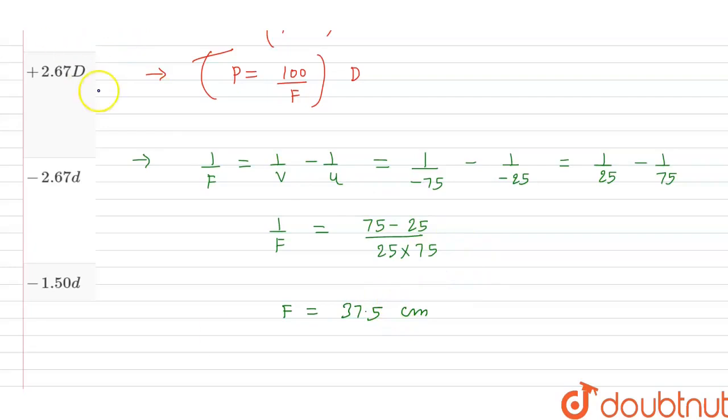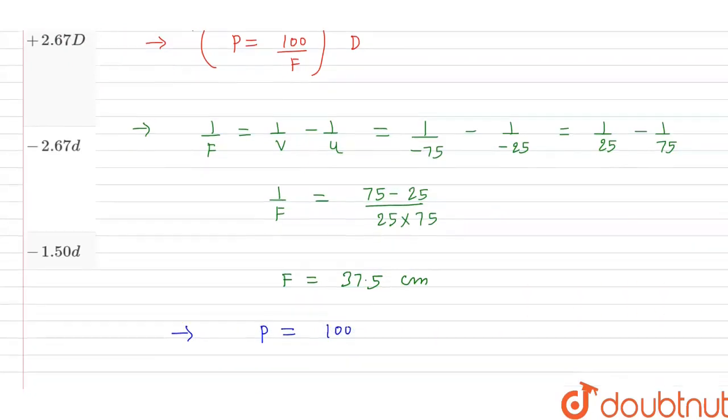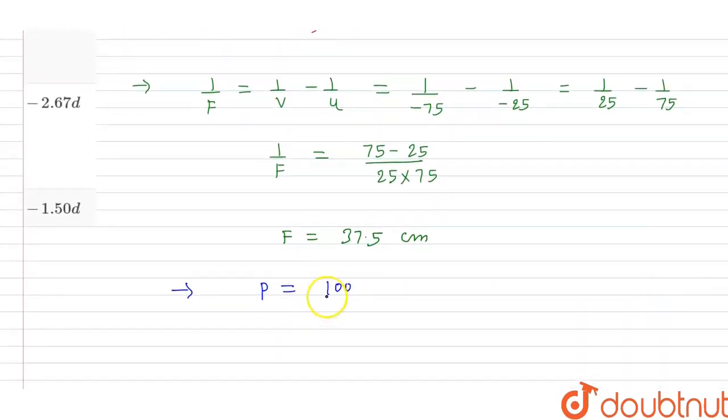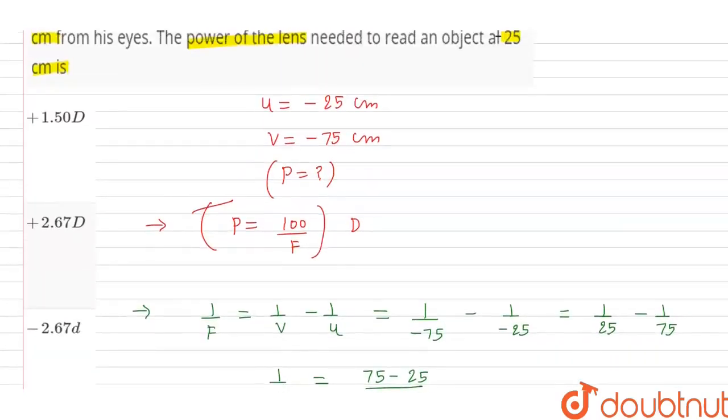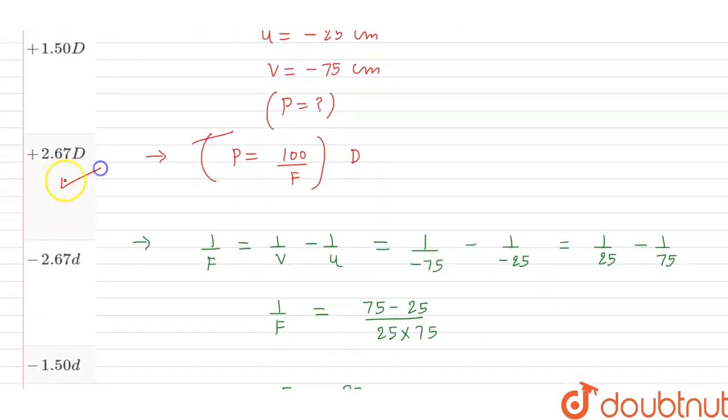Now we can calculate power of the lens. Power equals 100 divided by f equals 100 divided by 37.5. So after solving this we get power which is equal to 2.67 diopter. Now let's see which option is matching our answer. This is the answer. Option B is the correct option.